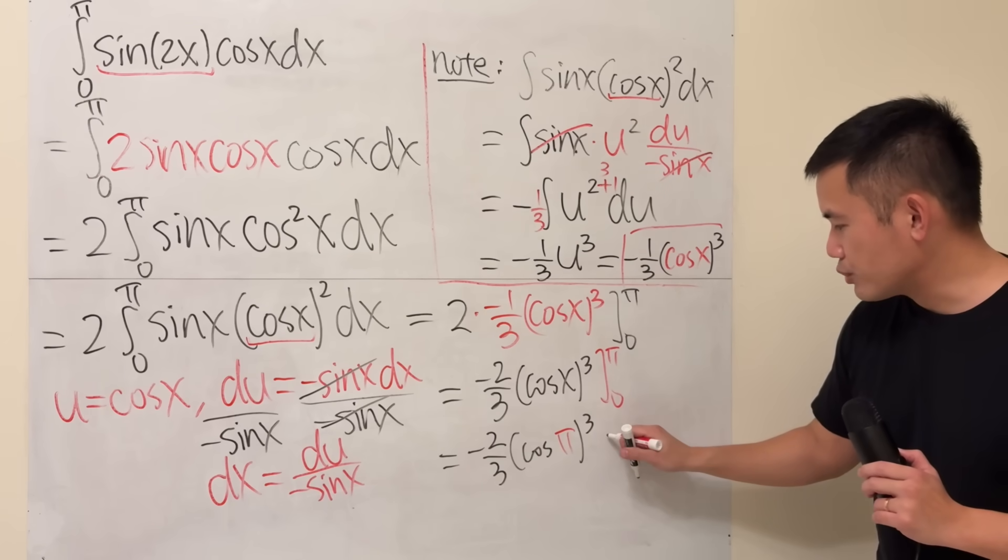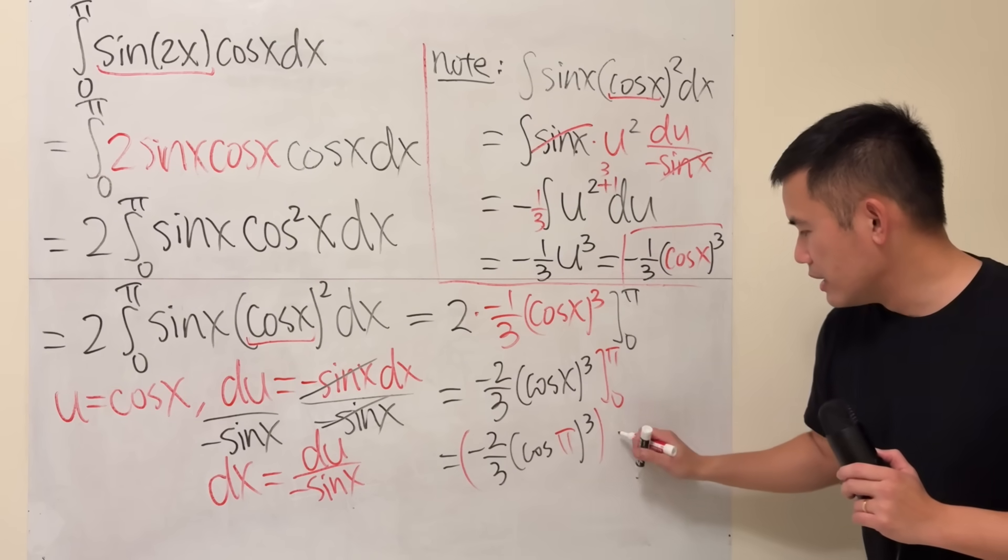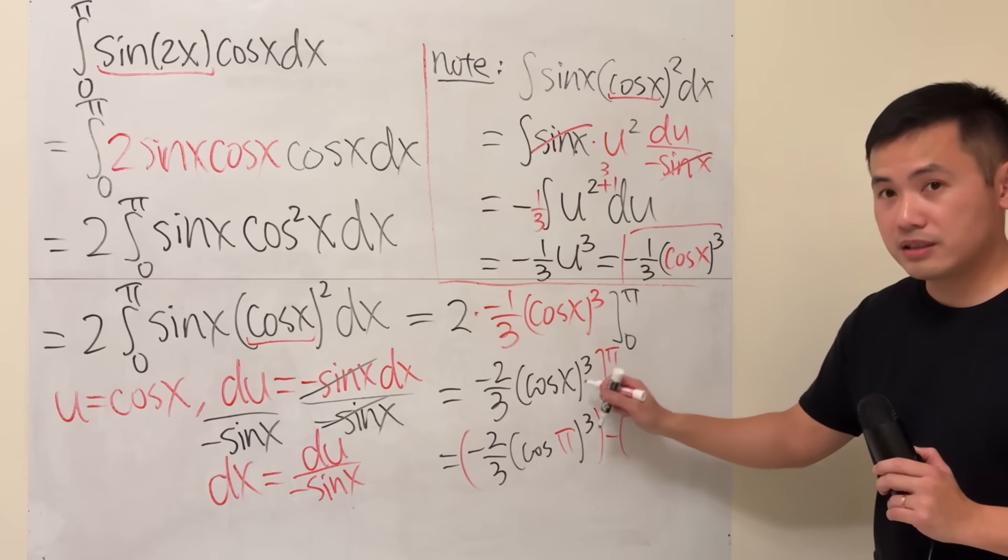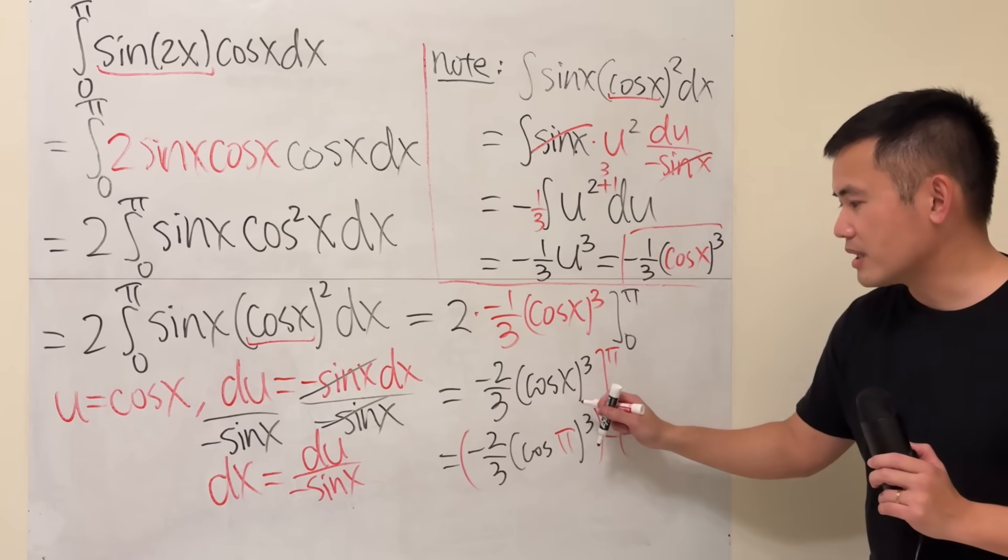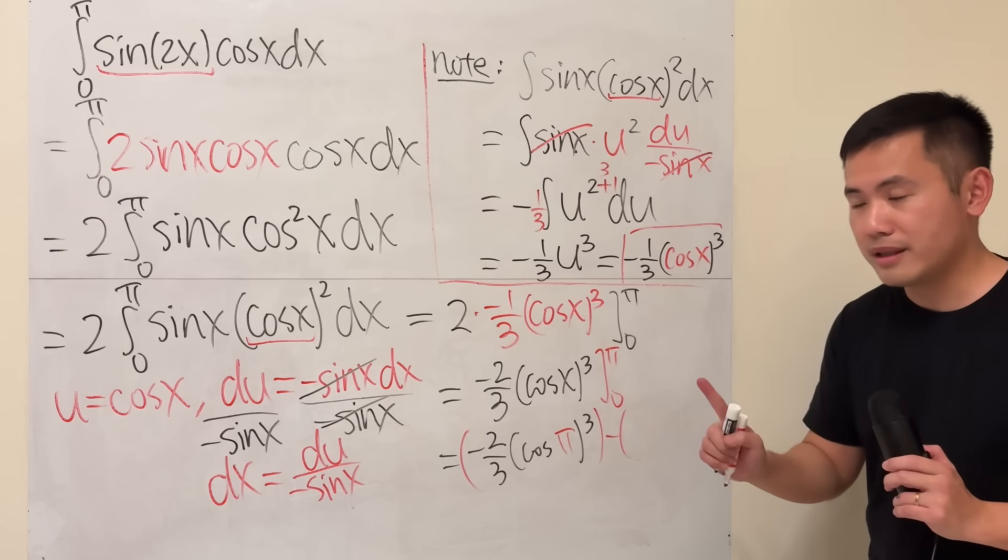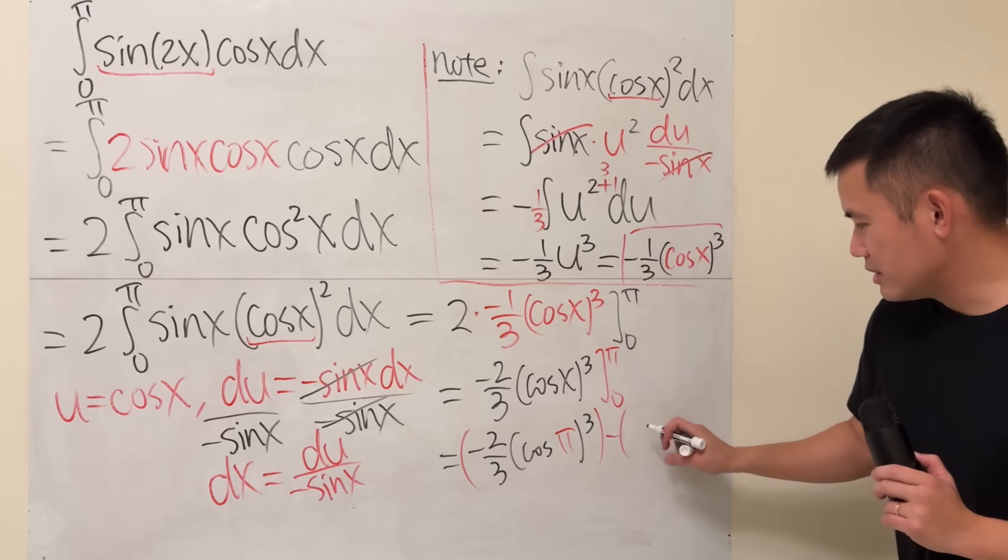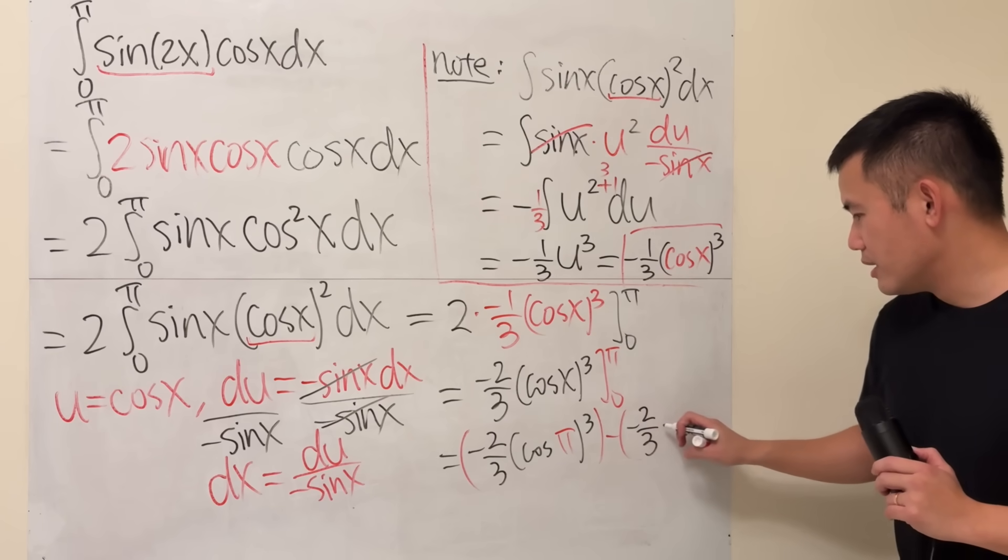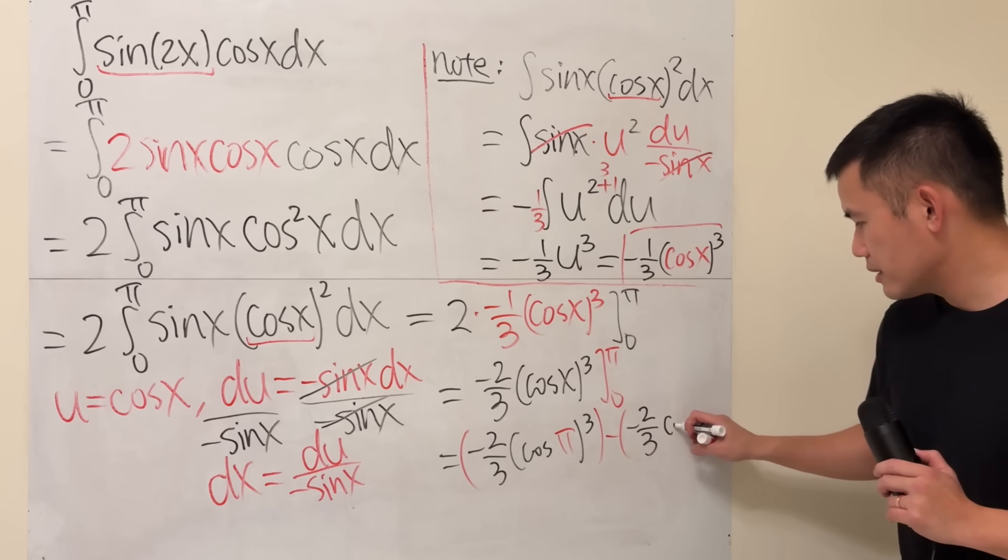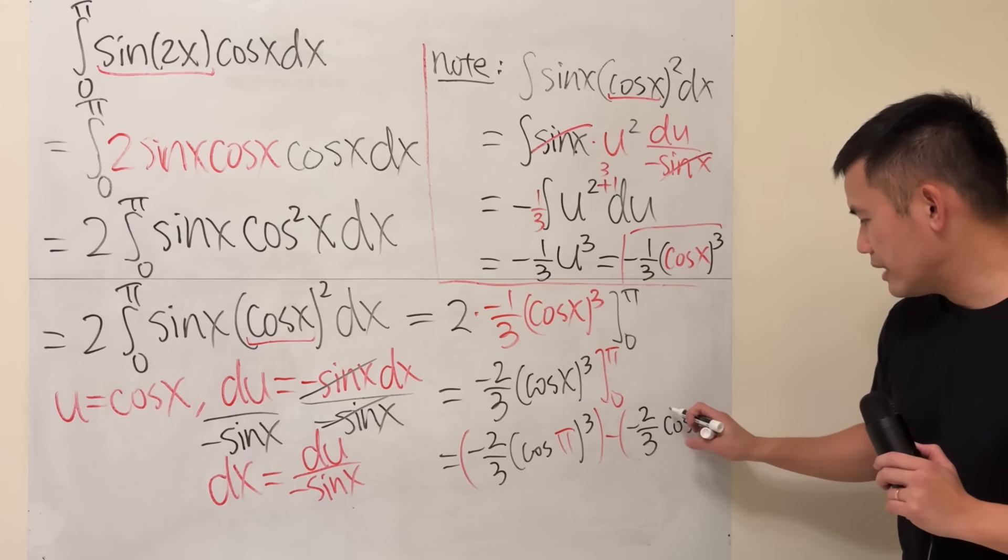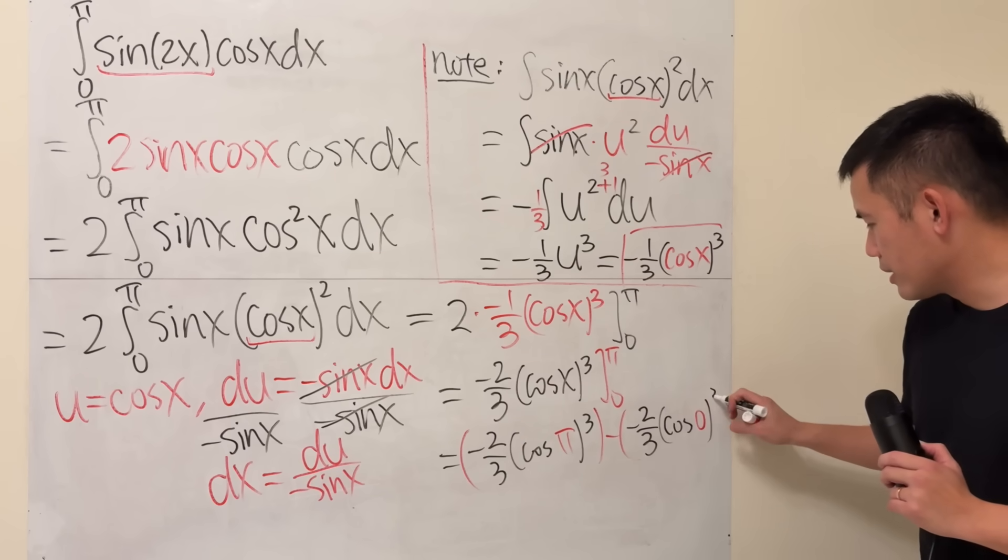And then remember you have to subtract. This is the first part. Subtract the second part, you plug in 0. This is needed because cosine 0 is 1. So you have to work that out. So this is negative 2 third, cosine 0, and then still the third power, like so.